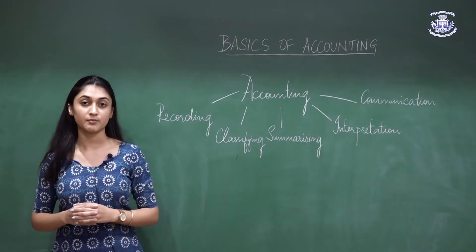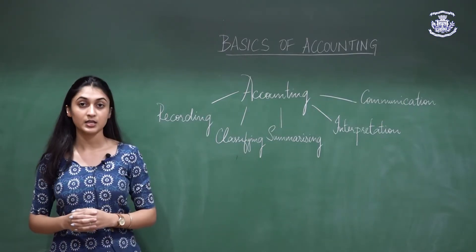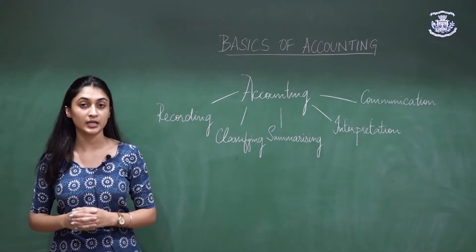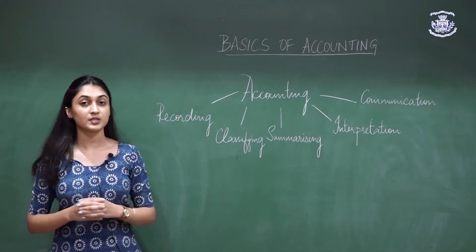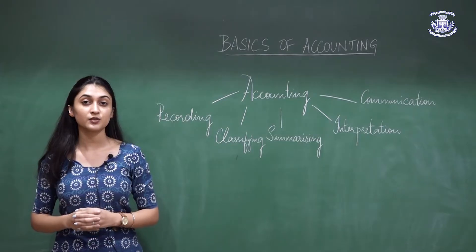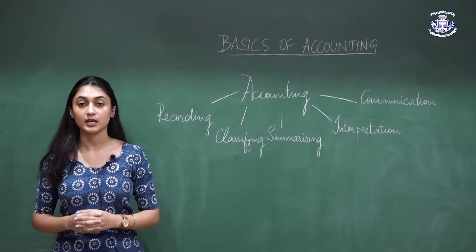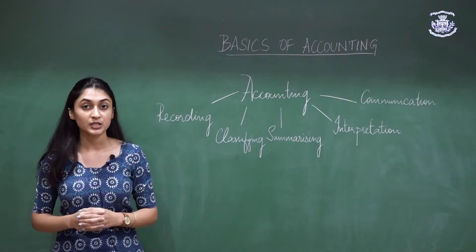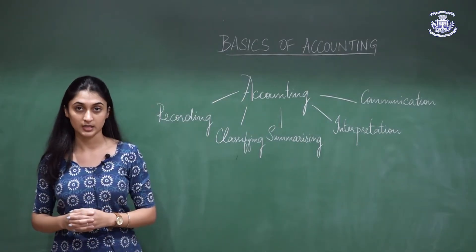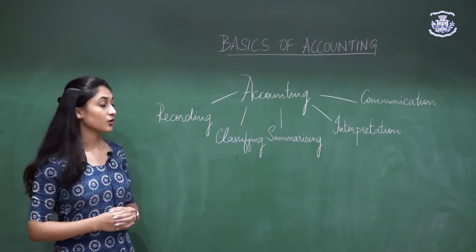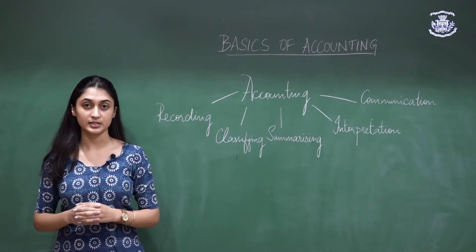The art of recording is recording all the transactions into records in an orderly manner. The art of classifying is grouping the items of similar nature in ledgers. The art of summarizing is presentation of the financial statements to the end users in the form of the balance sheet, the statement of profit and loss, or the cash flow statements.